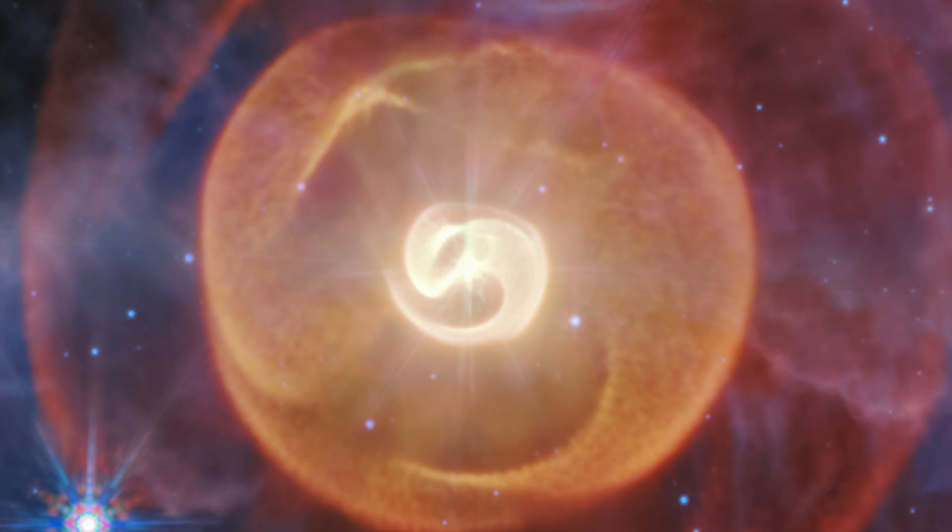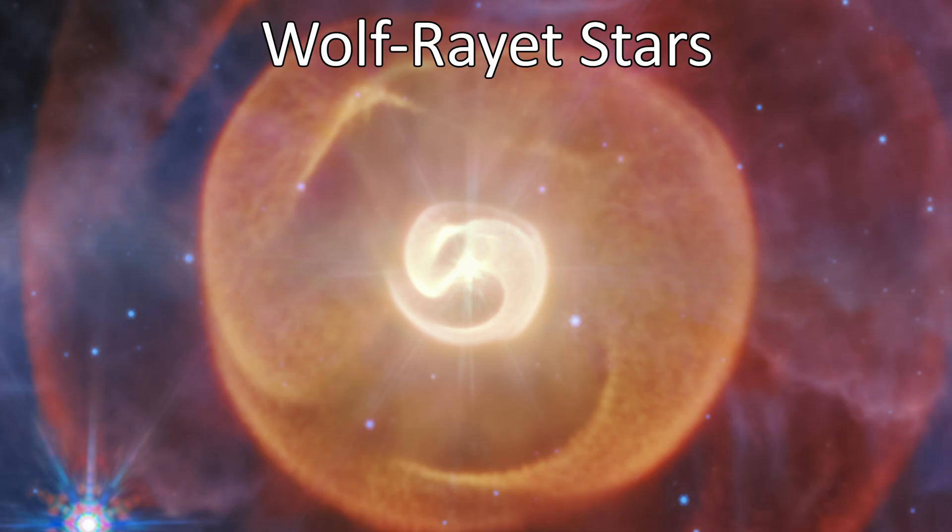These shells that we're looking at here have been emitted over the last 700 years. At the center are two aging stars of a special classification. They're called Wolf-Rayet stars.